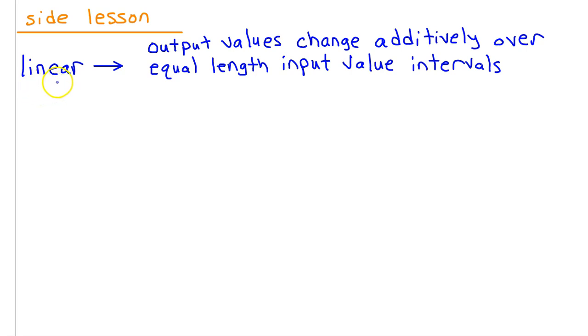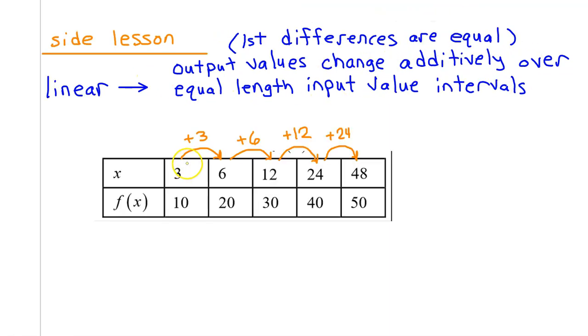We have learned that f of x is best modeled by a linear function if the output values change additively over equal length input value intervals. Or you could say a linear model is best if the first differences are equal over equal length input value intervals. However, looking at the table, we see that we do not have equal length input value intervals. The input values go up by 3, and then 6, and then 12, and then 24. Since we don't have equal length input value intervals, a linear model will not be best.